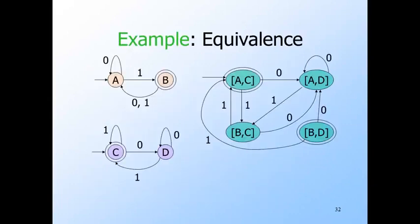Here, AC is a final state because C is final in the original automata and A is not. Likewise BD is final because B is final but D is not. We see that BD is not reachable from the start state, so there are no strings the orange automaton accepts but the purple one does not. However, AC is the start state itself, so the empty string distinguishes the two automata — it is accepted by the orange automaton but not the purple one.